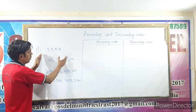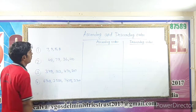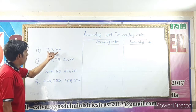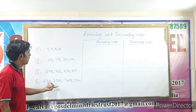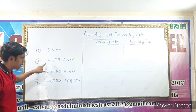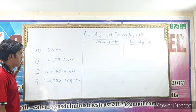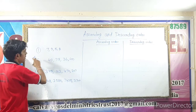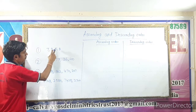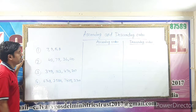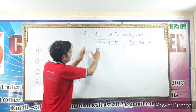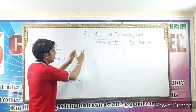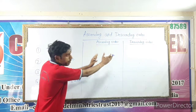Students, look at the board. Here we have four examples — one-digit numbers, two-digit numbers, three-digit numbers, and four-digit numbers. First example: 7, 9, 5, 8. This is first the ascending order, which means from the smallest to the biggest.